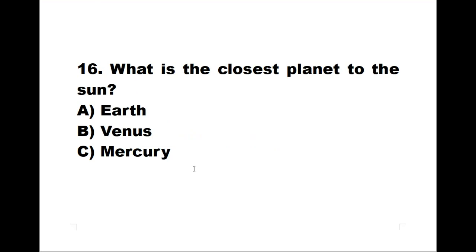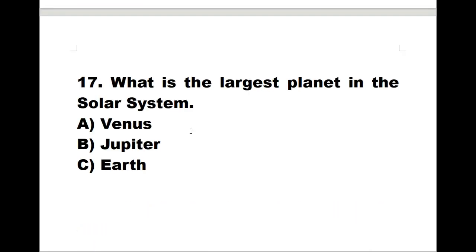Number sixteen: what is the closest planet to the sun? A: Earth. B: Venus. C: Mercury. The correct answer is C, Mercury. Number seventeen: what is the largest planet in the solar system? A: Venus. B: Jupiter. C: Earth. The correct answer is B, Jupiter.